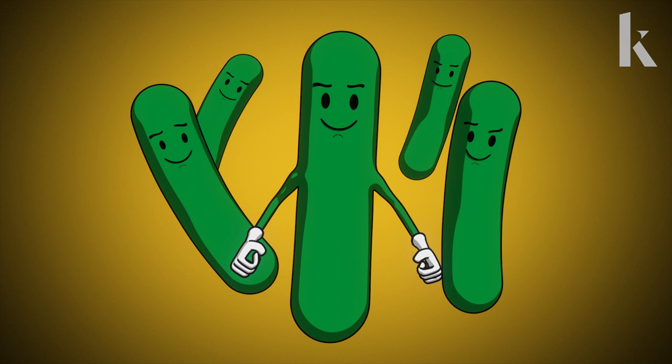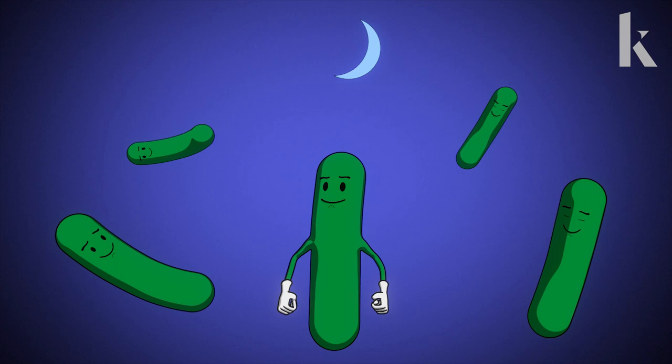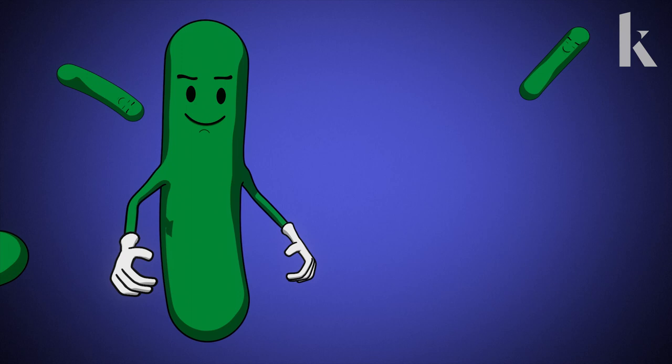Single-celled critters called cyanobacteria, which make food using energy from the sun, also have clocks that help them keep track of day and night. But how does their clock work?